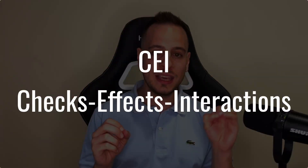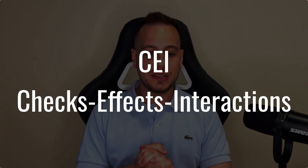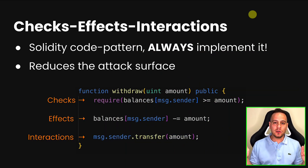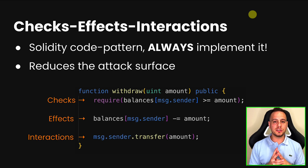The one thing you should do to avoid re-entrancy attacks 100% is always follow the CEI pattern. CEI stands for Checks-Effects-Interactions. It's a Solidity code pattern that you should always follow when writing your functions in Solidity, and it will 100% reduce the attack surface and make sure that your contract cannot be hacked with re-entrancy. Whatever function you write in Solidity, you first do the checks.